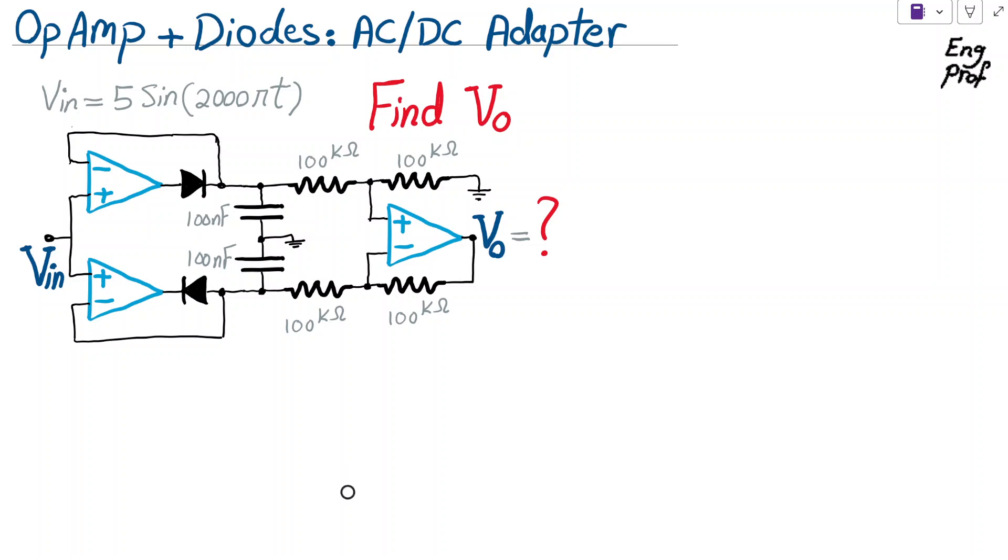In this op-amp plus diode circuit, we want to show that it is acting as an AC-DC adapter, and at the same time, with V in equal to 5 sin(2000πt), we want to find what is V out, as shown here.